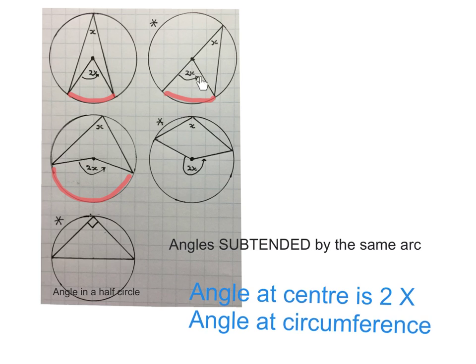So it's still the angle at the center is subtended by the arc, and the angle at the circumference is subtended by the arc. Watch out for that one. That's why there's a star.